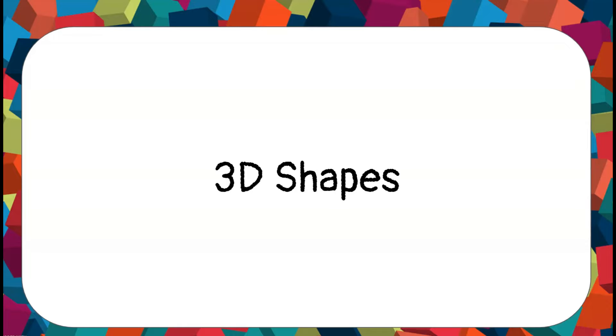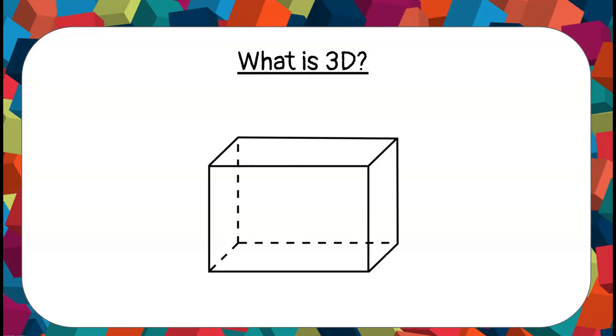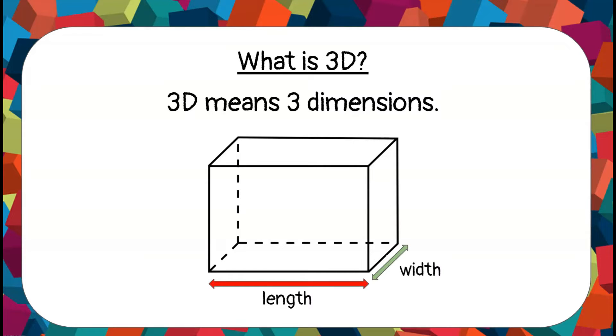Hello everyone, today we are going to learn about 3D shapes. What is 3D in the first place? 3D means three dimensions. In this shape, cuboid, we have length, width, and height. These are the three dimensions that make up a 3D shape.